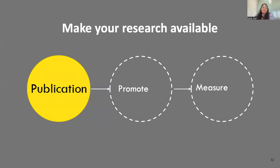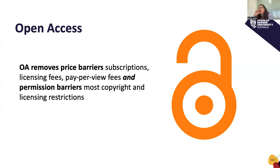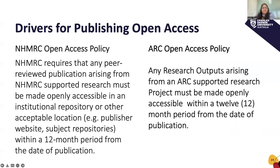The next step is making your research available, and in this step we'll be focusing on open access publishing. Open access publishing removes price barriers — subscriptions, licensing fees, and pay-per-view fees — and also removes permission barriers like most copyright and licensing restrictions. It means that anyone can view your research through the internet with no paywall, so your article will reach a wider audience. Some of the drivers for open access publishing include government grants and NHMRC and ARC requirements — it is a requirement that you publish open access.